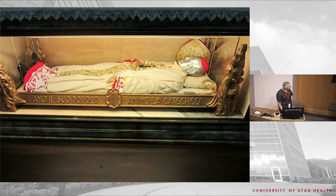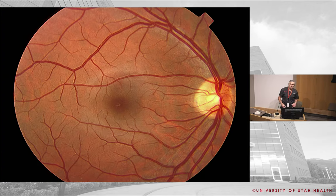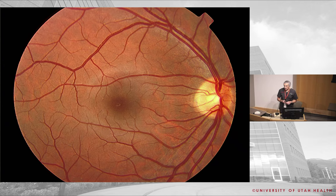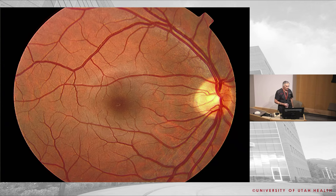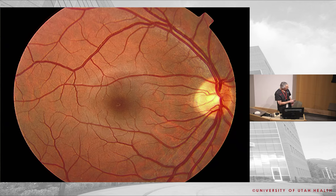Now we're going to talk about the retina. When we talk about the retina we want a few definitions. From the pathologist's perspective, the definition of the macula is where there are two or more layers of ganglion cells. That matches up with the retina doctor's definition: the area temporal to the disc within the arcades.